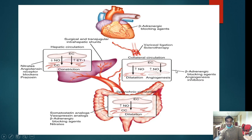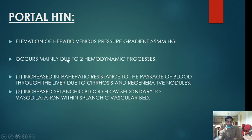Whenever collaterals are formed, you prevent them by giving beta blockers and angiogenesis inhibitors. That is why beta blockers are very much indicated to prevent portal hypertension. Increased nitric oxide causes splanchnic vasodilation, which drives collateral formation.